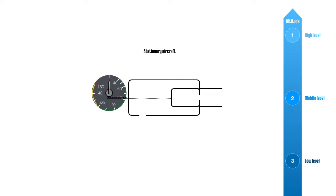For demonstration purposes, let's assume that at low-level altitude static pressure has a value of three units. The middle level has two units, and high level has only one unit.